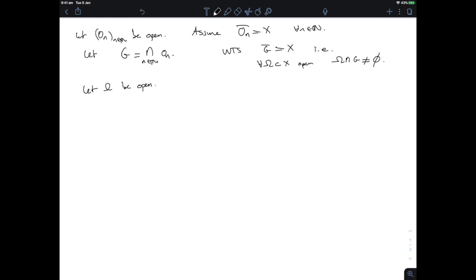And I need to show that it does intersect G. Now Ω is open so I can pick an x₀ in Ω and a number r₀ such that the ball centered at x₀ of radius r₀ is included in Ω because it is open.